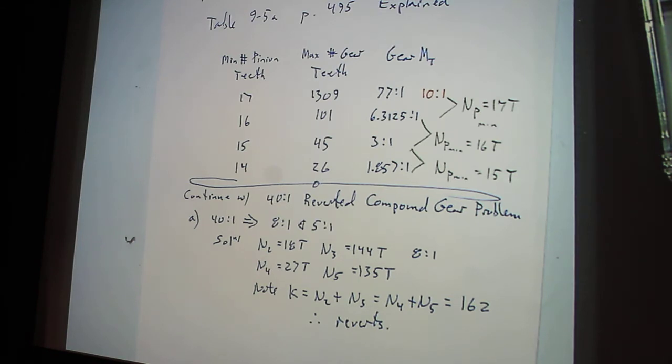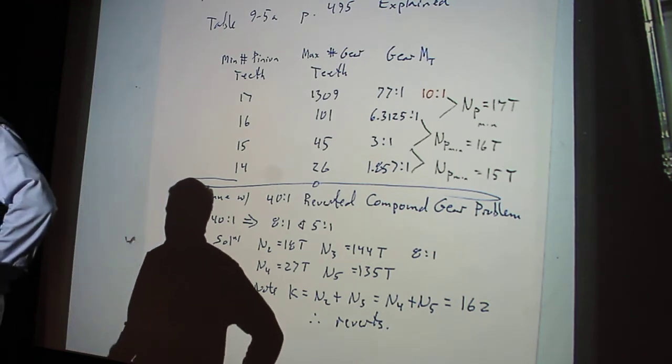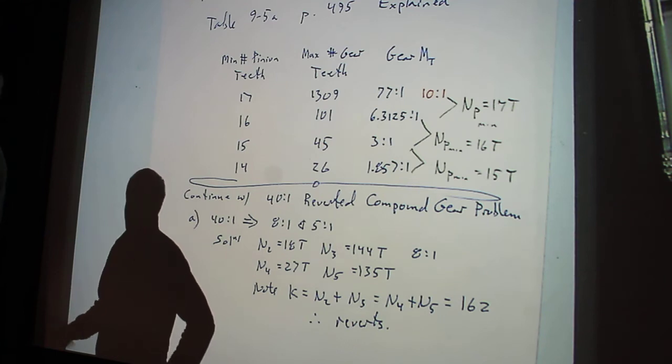And we started to do B. Now, what we do first is we look at the least common factors. So we took 40 and we did 2 times 2 times 2 times 5. And then we came up with that 8 to 1 and that 5 to 1.